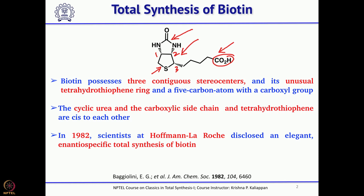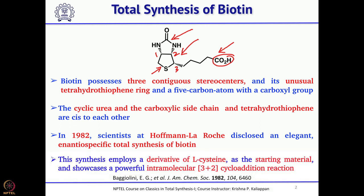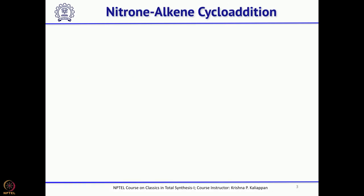A lot of interest was there in the early 60s, 70s, and 80s to synthesize this biotin. The first synthesis was reported by the Roche group, and here they used a very interesting intramolecular 3+2 cycloaddition of a nitrone and an alkene. They started with the naturally occurring amino acid cysteine — actually they used a dimer of cysteine — and tried this intramolecular 3+2 cycloaddition reaction. So what is this 3+2 cycloaddition between nitrone and alkene?